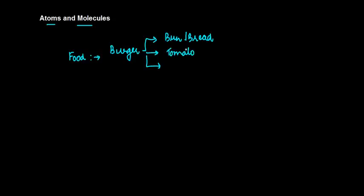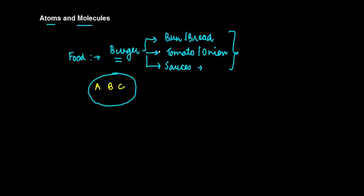The burger has tomatoes, onion, you put in some sauces and things like that. A burger is basically a combination of these three things or maybe more - let's call them A, B, and C. If I pick up one of them, let's say the buns, a bun is basically made of something called matter.